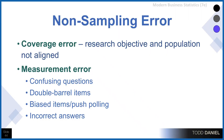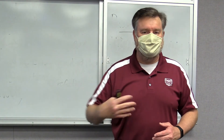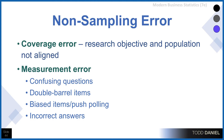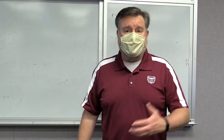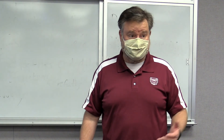Measurement error can occur for any number of reasons, like confusing questions that are poorly worded. Double-barreled items where we're asking two things in the same question. Biased items or push polling where we say, 'this is the case, don't you agree?' — and that creates a bias in the way that our respondents might answer. Or incorrect answers, where someone meant to mark A and instead they marked B, so their answer doesn't correspond to how they really feel or would answer the question.